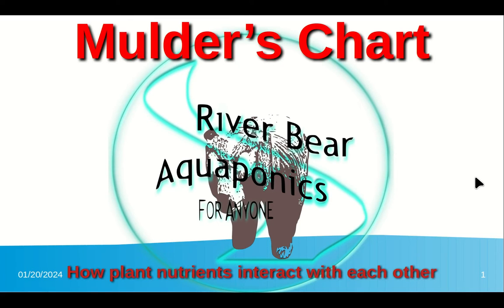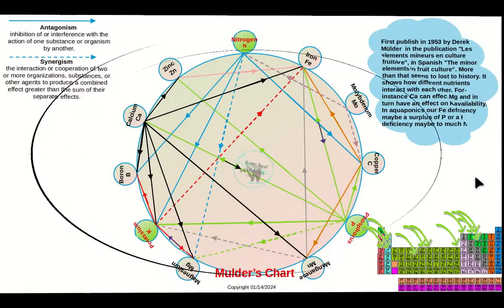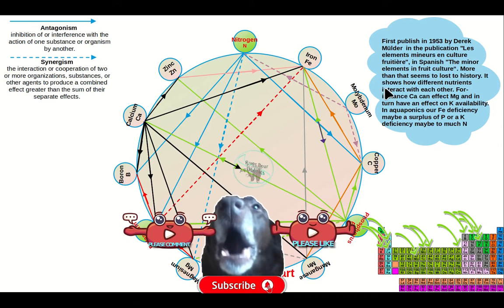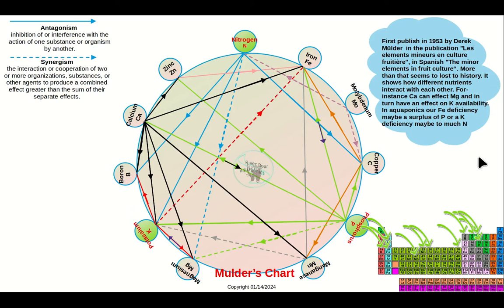Mulder's Chart shows how plant nutrients interact with each other, first published in 1953 by Derek Mulder in a publication about minor elements in fruit culture. Unfortunately, much of the information about him seems to be lost in the journals of history. The chart shows how different nutrients interact — for instance, calcium has an effect on magnesium, which in turn affects potassium's availability. In aquaponics, iron deficiencies can indicate too much phosphorus, and potassium deficiencies can indicate too much nitrogen.